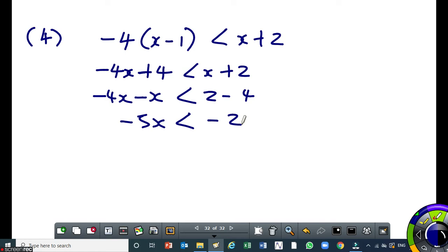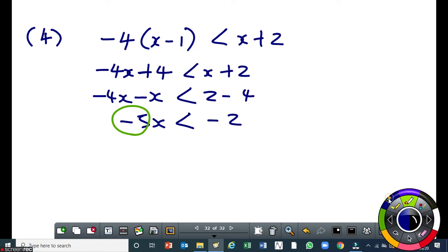And that will give you minus 5x is less than minus 2. Now, since we have a negative coefficient here, it means our inequality sign is going to change from being a less than sign to a positive sign. So, the next step is to be minus 5x over minus 5 is greater than minus 2 over minus 5. So, the final answer of x is greater than 2 over 5.